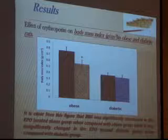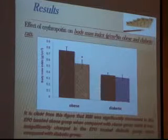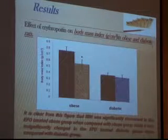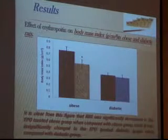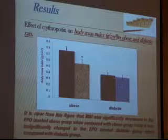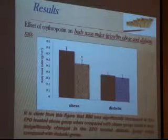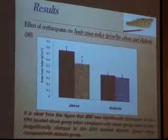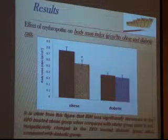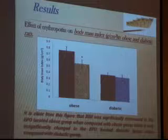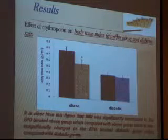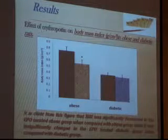Finally, regarding body mass index, it is clear from this figure that body mass index was significantly decreased in the erythropoietin-treated obese group when compared with the obese group, while it was significantly changed in the erythropoietin-treated diabetic group when compared with the diabetic group.